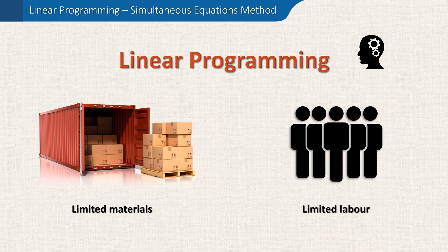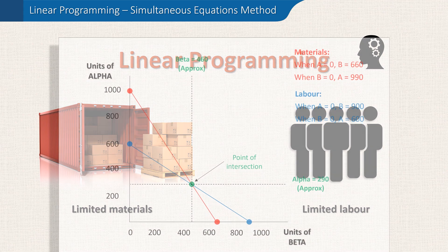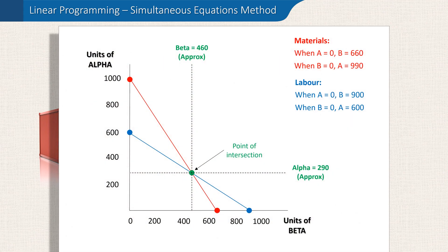We also showed how plotting points on a graph could show us what this optimum production plan is. It was the point of intersection for our two lines of production. From our graph we estimated that approximately 290 alphas and 460 betas needed to be produced to maximise contribution using our limited resources.